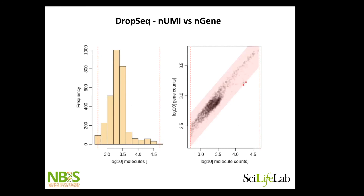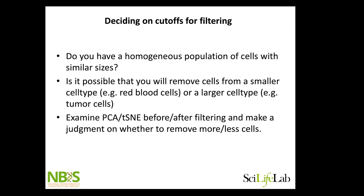With Drop-seq data, it's fairly common to plot number of UMIs versus number of genes and detect outliers. And also think about — do you have cycling cells? If cells are cycling, they will double in size during cell cycle progression, so a cell just about to divide will be twice as big as after division. That, of course, will also give differences in how many genes we detect.